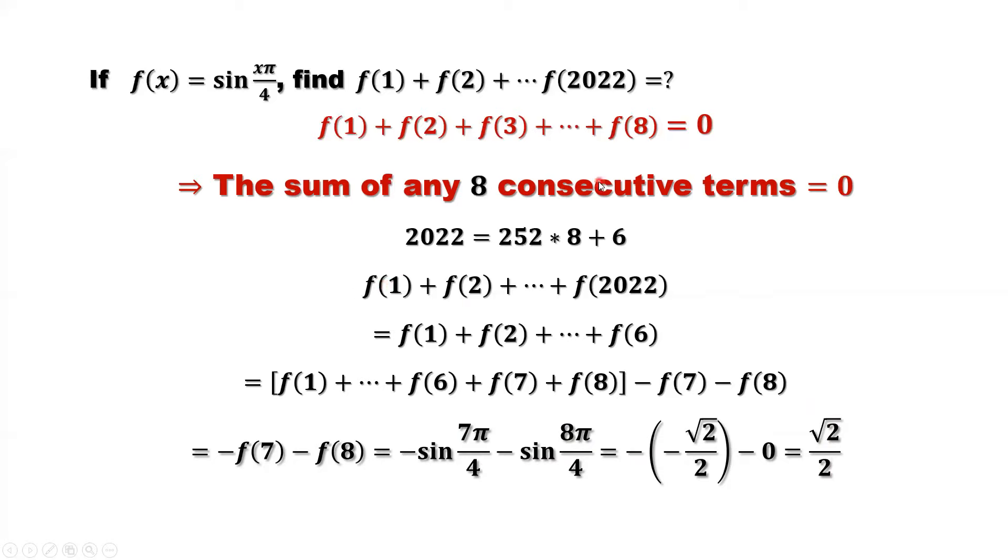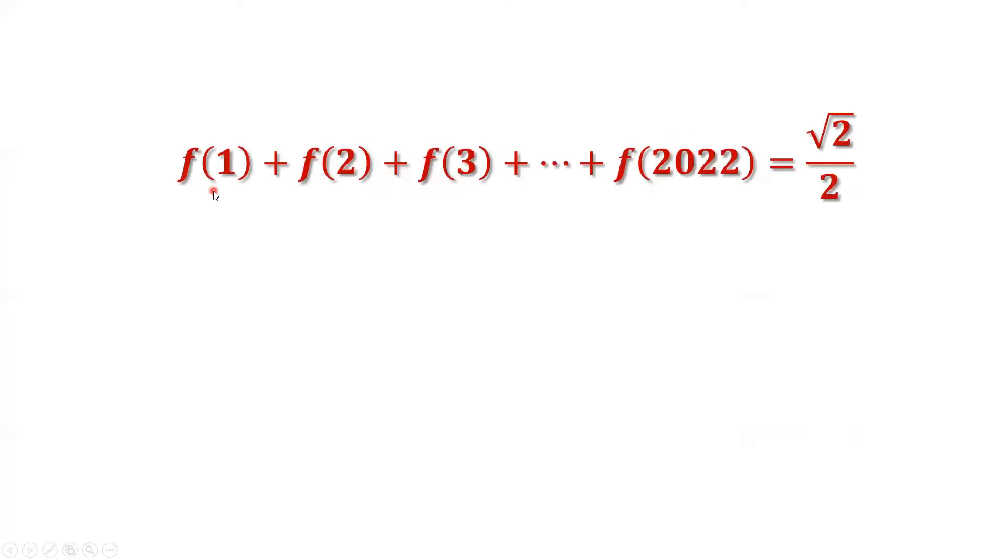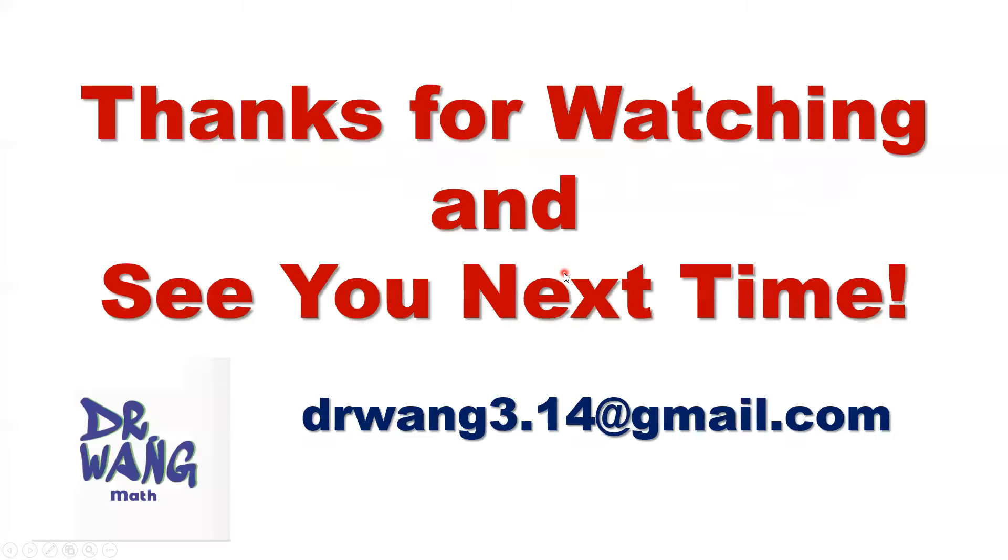So here is the summary. The summation of f of 1, f of 2, until f of 2022 equals square root of 2 over 2. That's all. Thanks for watching, and see you next time.